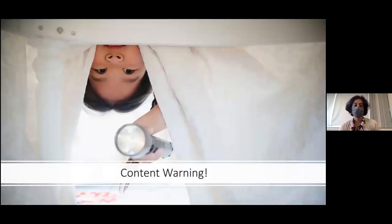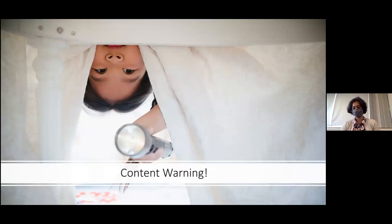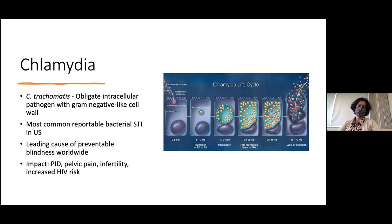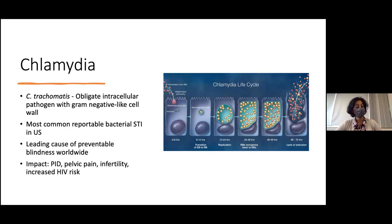Because of the nature of this talk, there will be some sensitive images — I'll post a warning slide before showing any pictures. Chlamydia is the most common reportable bacterial STI in the U.S. It's an obligate intracellular pathogen with a gram-negative-like cell wall, and is associated with significant morbidity including pelvic inflammatory disease, chronic pelvic pain, infertility, and increased HIV transmission risk. Worldwide, it's the leading cause of preventable blindness.